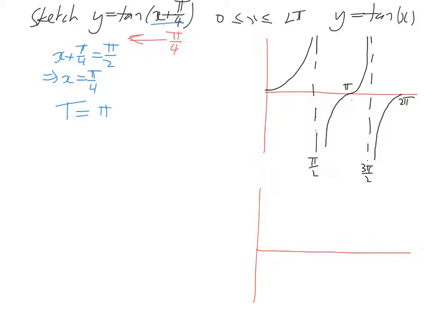But like I said, it's been moved across. So we've got to say, for our graph it's going to be t equals pi minus pi on 4. So the answer being 3 pi over 4.